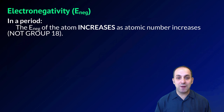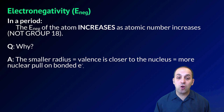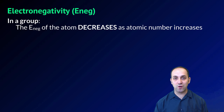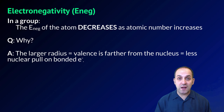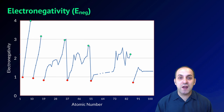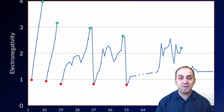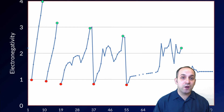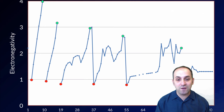In a period, electronegativity increases as atomic number increases because of that smaller radius. Since the radius is smaller, the valence electrons are closer to the nucleus, meaning there's more nuclear pull on bonded electrons — more Coulombic attraction. In a group, electronegativity generally decreases as atomic number increases because the larger radius moves the valence electrons farther from the nucleus, resulting in less nuclear pull on bonded electrons. On the graph of electronegativity, starting with group 1 elements in red and ending with group 17 halogens in green, you can see electronegativity increases within a period and decreases within a group.